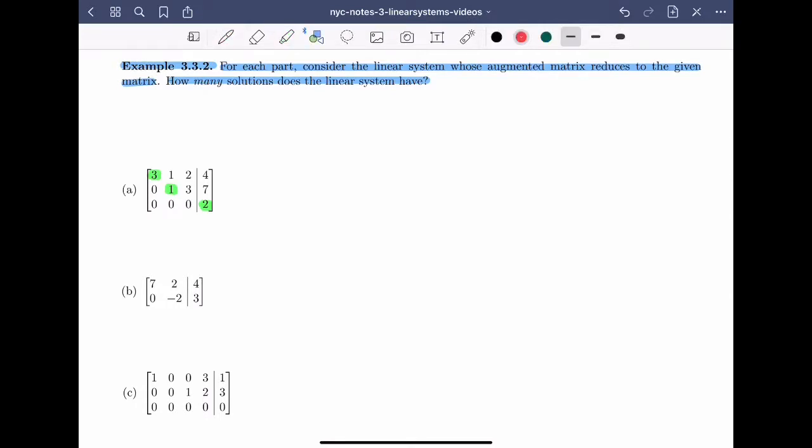So what does that mean to me? Well, let's look at this row here. And remember, what this row says is that 0x plus 0y plus 0z is equal to 2. Yikes. 0 is equal to 2. Impossible. No solutions.